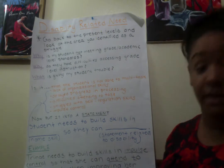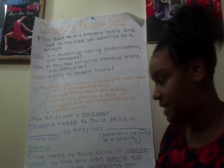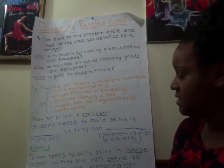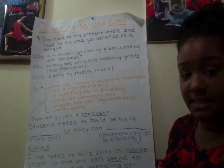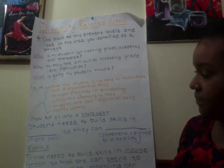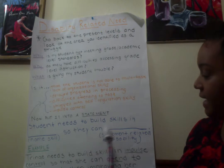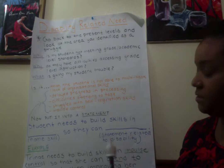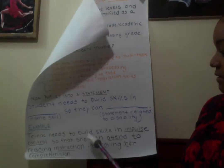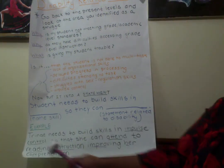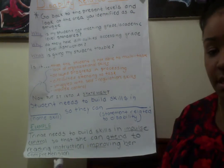That's a disability related need. You then put that into a statement. You do not have to use this statement — this is the template given to us in training that I feel is really helpful to keep things straight. I recommend using it until you get comfortable creating these statements yourself. The template is: 'Student needs to build skills in [name the skill] so they can [statement related to disability].' In this case: Trinae needs to build skills in impulse control so that she can attend to reading instruction, improving her comprehension.